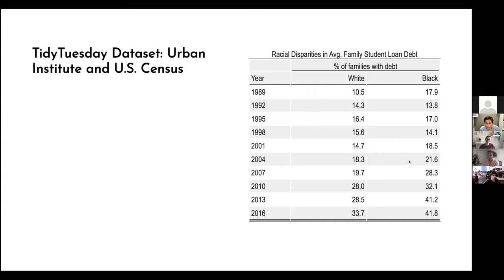Here's my table. The data is from the Urban Institute and U.S. Census, but it was prepared for Tidy Tuesday — an organization run by Thomas Bach in R for Data Science that cleans and prepares a dataset every week for people to create visualizations. This dataset is about racial disparities in average family student loan debt, from 1989 to 2016. I limited it to white and Black racial groups, and each point is the percentage of families with debt. You can see there's always been a disparity — a gap between the percentage of Black families and white families with debt. That's what we're going to highlight.